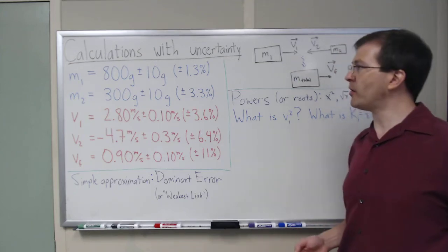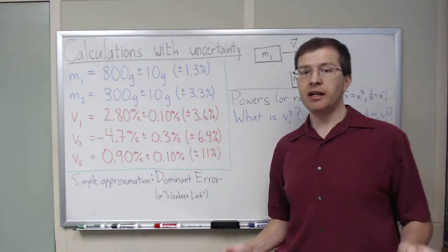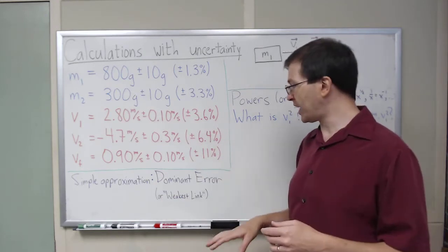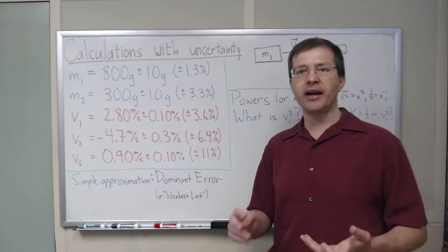This is one of a series of videos talking about how to take measured quantities, including uncertainties, and do calculations with them. In particular, when it's relevant, I'm going to look at the dominant error rule, or weakest link rule, for how to combine uncertainties.